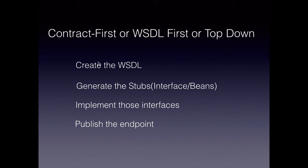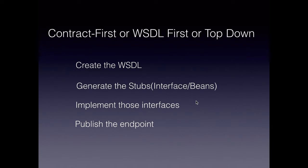To create a WSDL file, we typically have tools or IDEs that will help us. Once we do that, we can generate the stubs using tools like WSDL to Java. Every programming language and platform has an appropriate tool to generate the language objects.